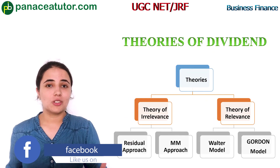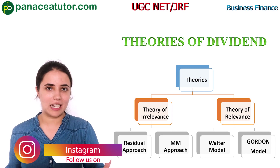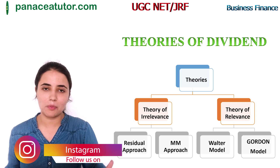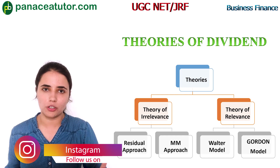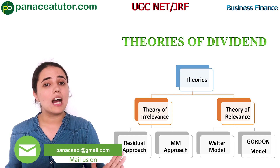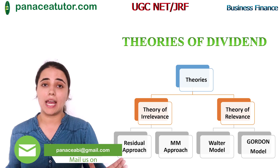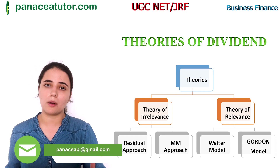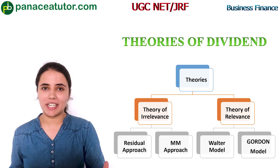Moving on to theories of dividend. Theories of dividend are divided into two parts: theory of relevance and theory of irrelevance. Under theory of irrelevance we will study two approaches — the residual approach and the MM approach. Under theory of relevance we will study two models — the Walter model and the Gordon model. From examination point of view, the assumptions of these approaches as well as the formulas of the models are very important. UGC has asked questions from the assumptions and sometimes formulas have come in the form of match the column, so we will discuss them in detail.